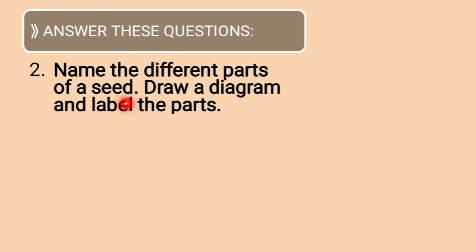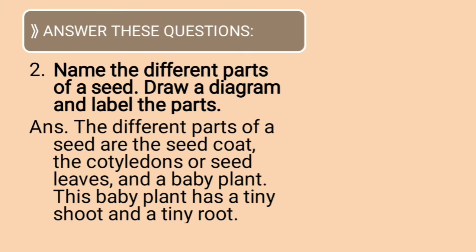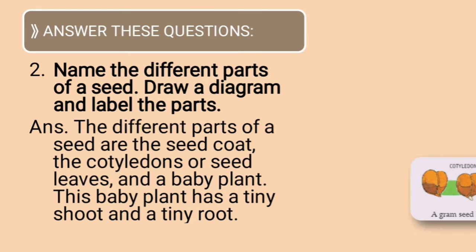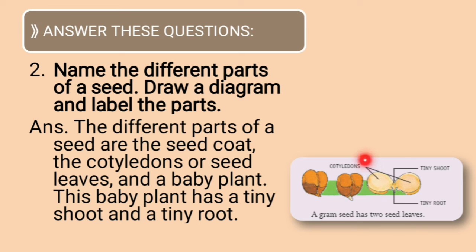Name the different parts of a seed and draw a diagram. The different parts of a seed are: seed coat, cotyledon or seed leaves, and baby plant — which has a tiny shoot and tiny root. You should draw a diagram showing two cotyledons, the tiny shoot, and the tiny root, and label all the parts.